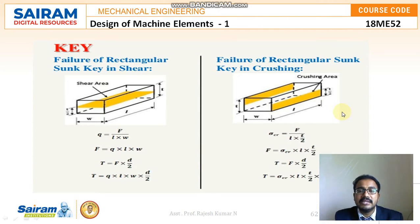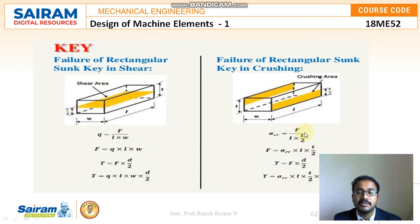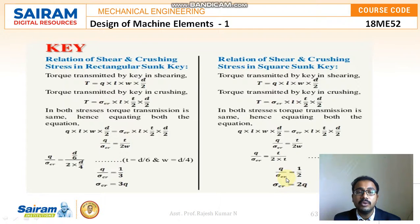Now for the crushing failure of the same rectangular sunk key: the yellow color indicates the part where crushing occurs. The total thickness is t, so the crushing part thickness is t/2. The crushing stress is σ_cr = F divided by (l × t/2), so F = σ_cr × l × t/2. Therefore the torque is T = F × (d/2) = σ_cr × l × (t/2) × (d/2).